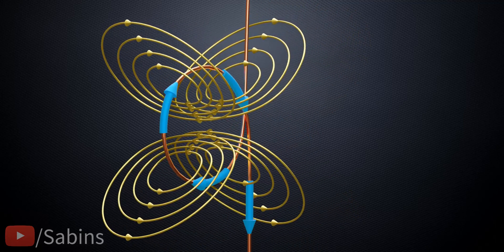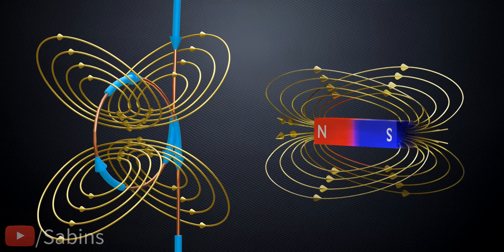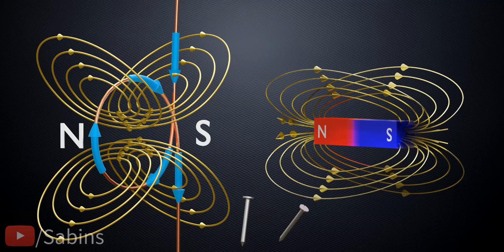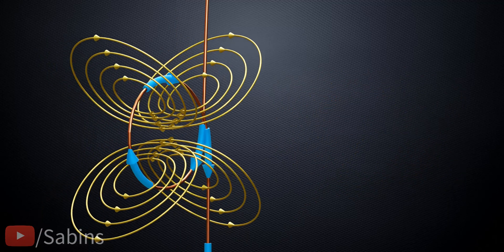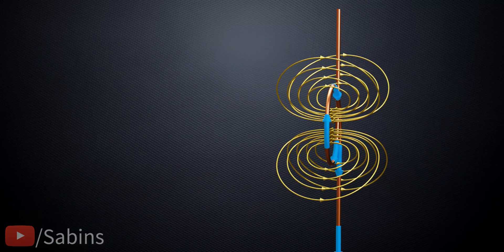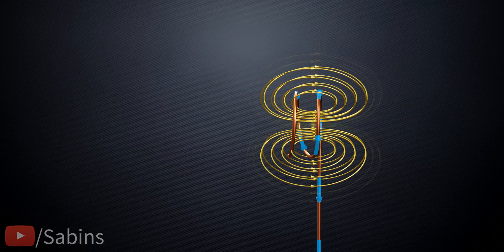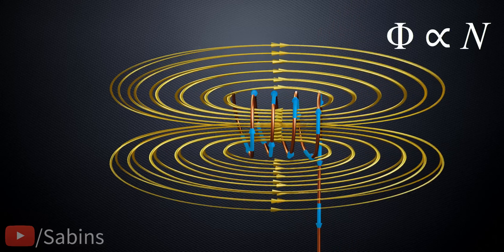This magnetic field pattern is similar to that of a permanent magnet, which is why a current-carrying loop acts like a permanent magnet. Clearly, simply by increasing the number of loops, we can increase the magnetic flux.